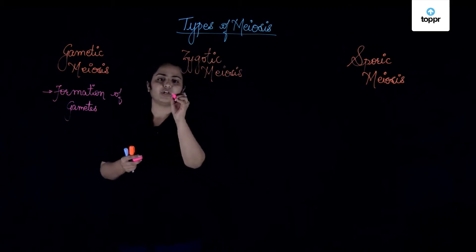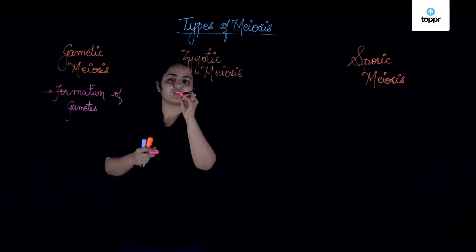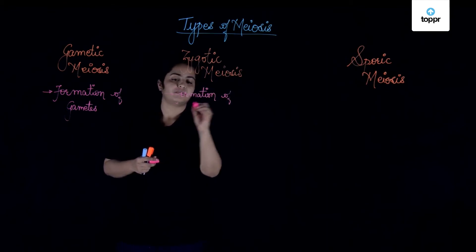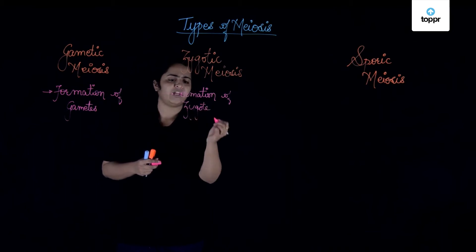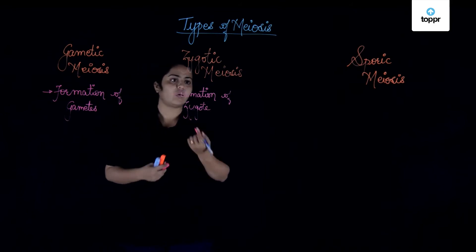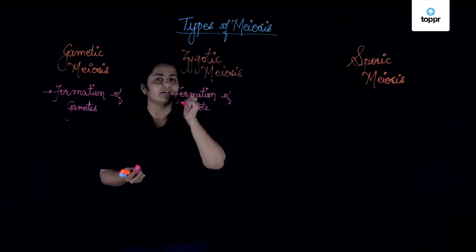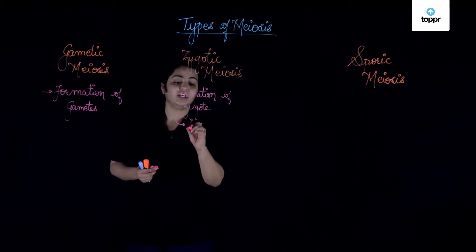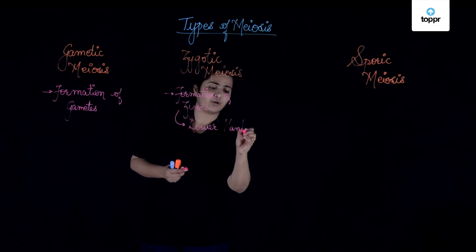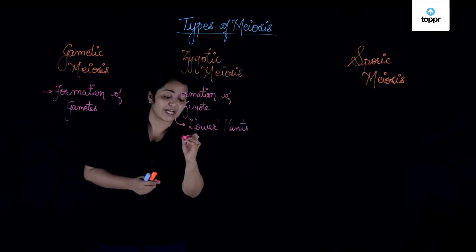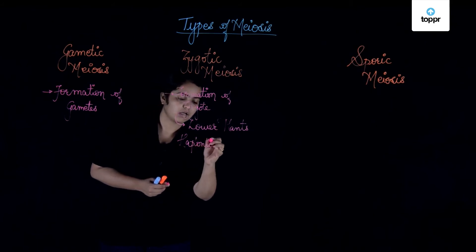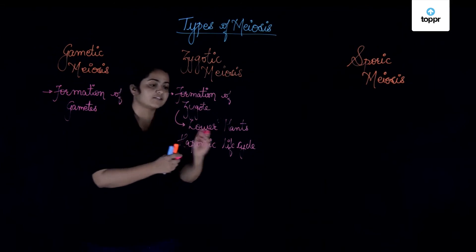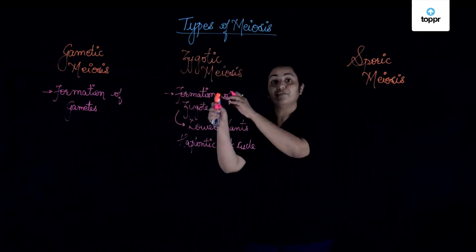What is zygotic meiosis responsible for? It is responsible for formation of zygote. Zygote means organism, and organisms are usually diploid in nature — so how can meiosis form organisms? The simplest logic is that this phenomenon occurs in lower plants — those lower plants which exhibit the haplontic life cycle. These lower plants exhibit formation of zygote through zygotic meiosis.